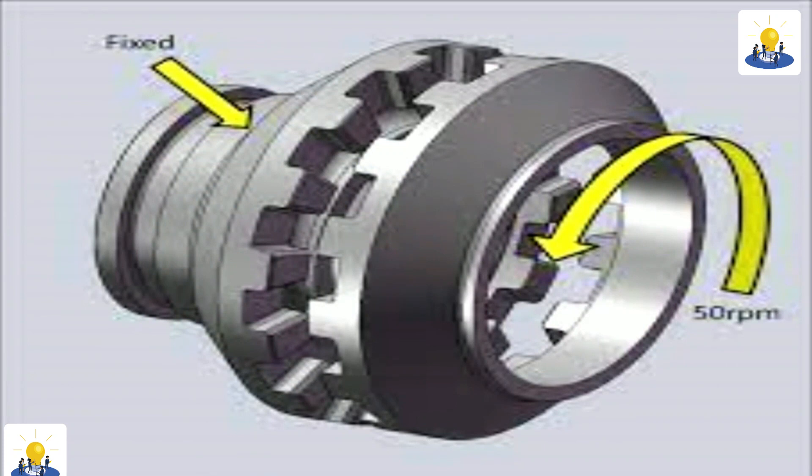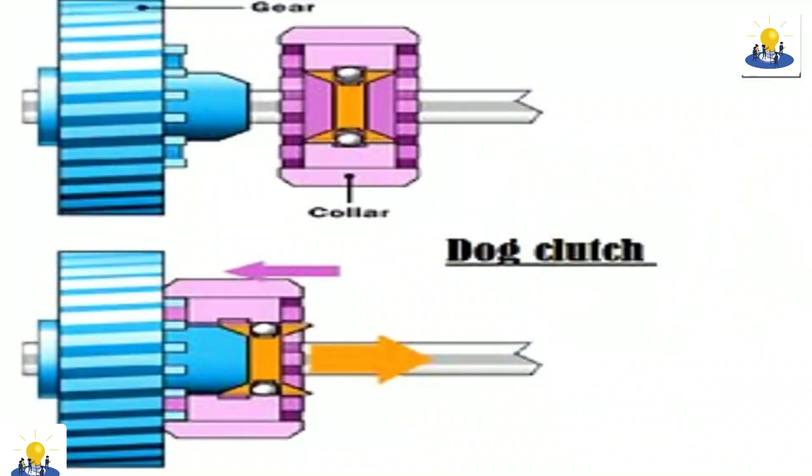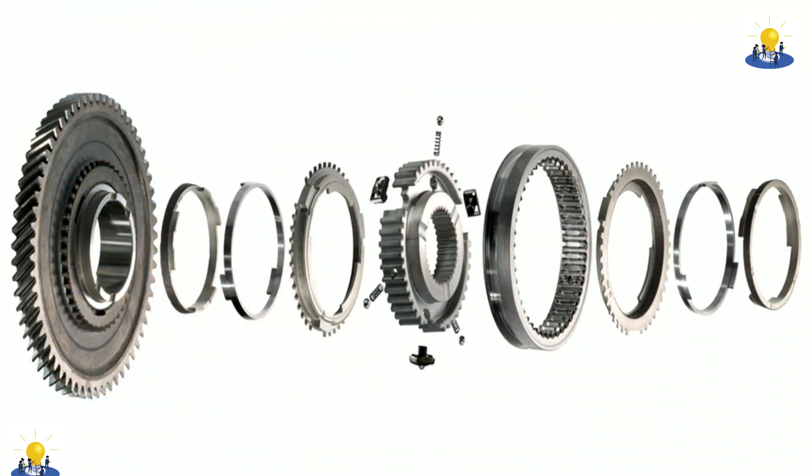When the dog clutches for all gears are disengaged, when the transmission is in neutral, all of the gears are able to spin freely around the output shaft.